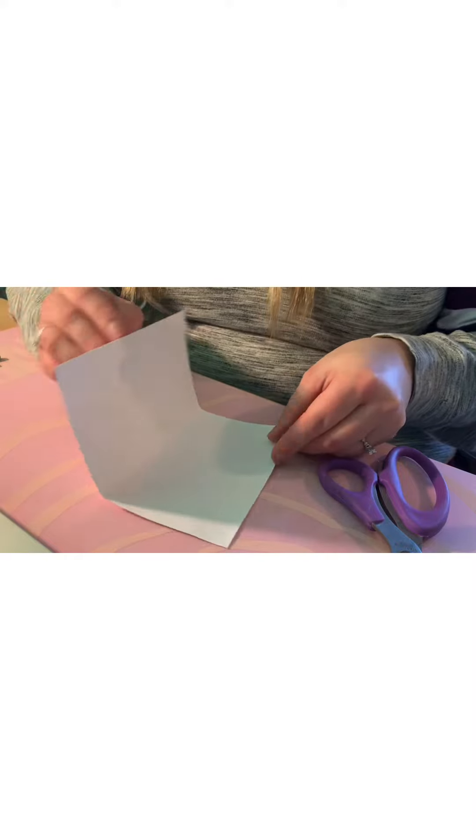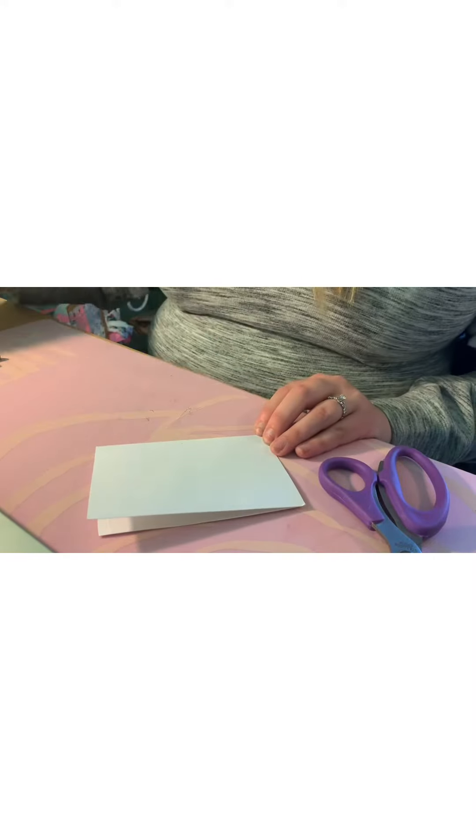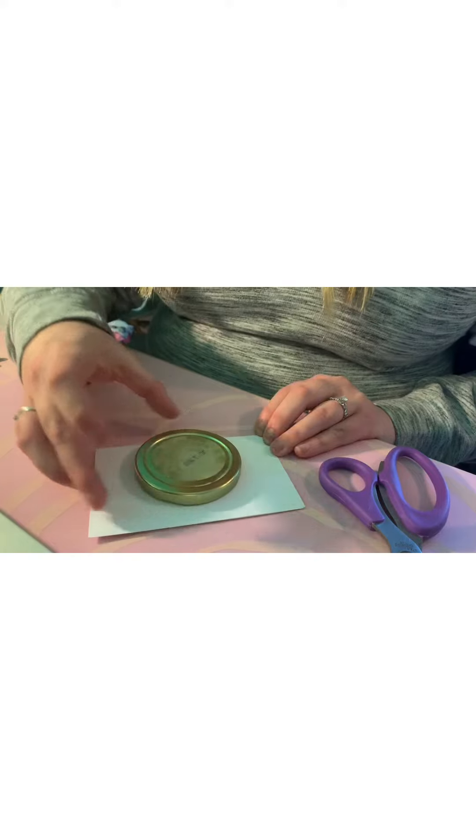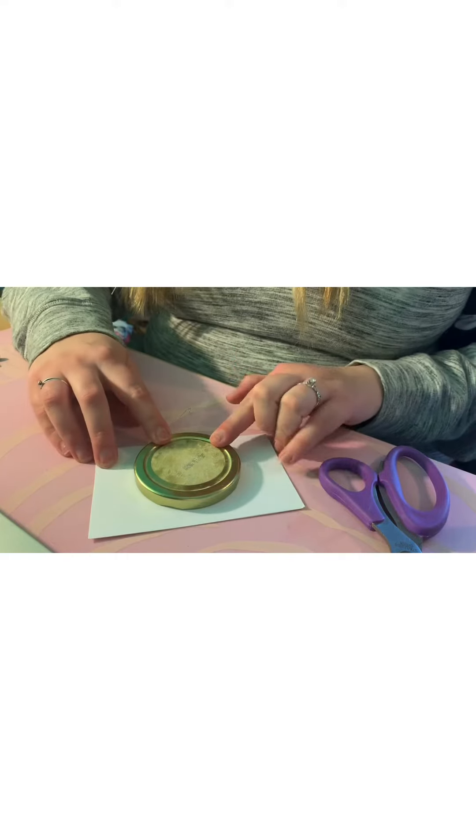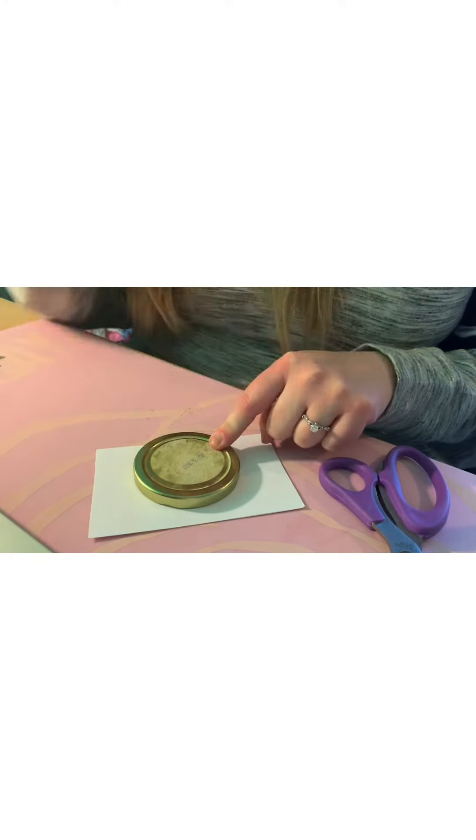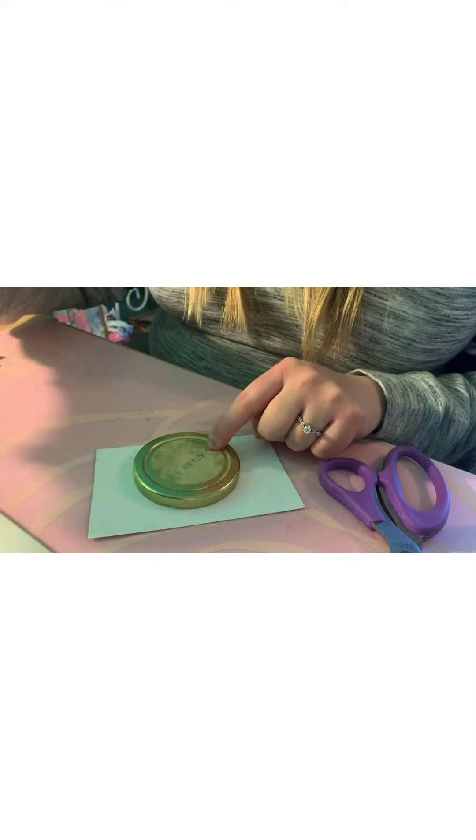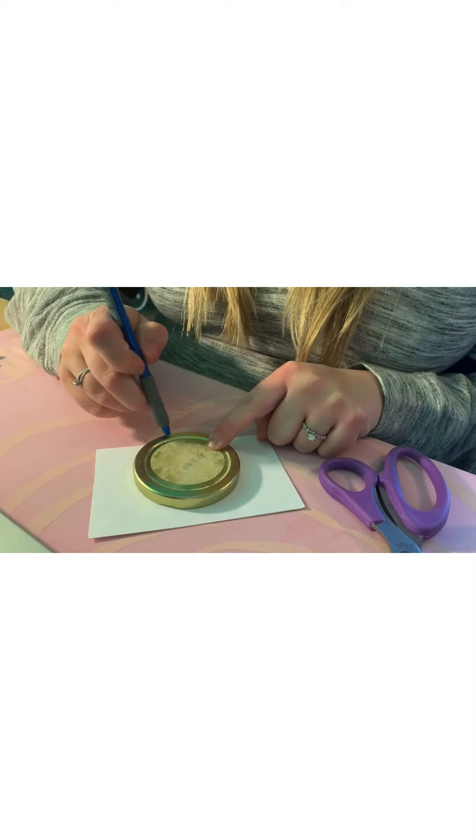To start, fold your piece of paper in half. Then take your round object and put it on your piece of paper on the folded edge. Next, trace around.